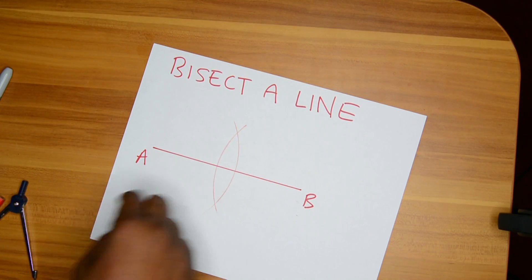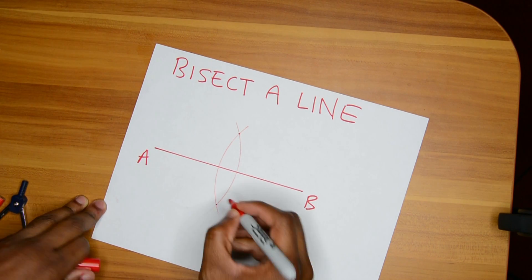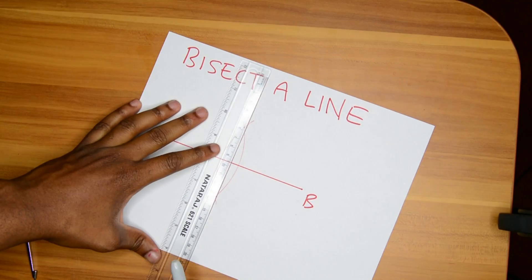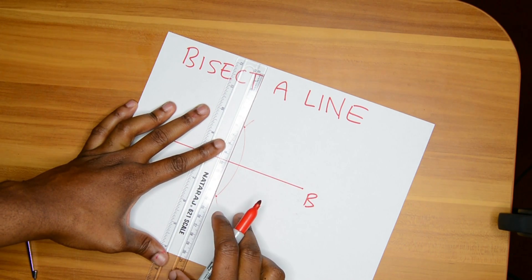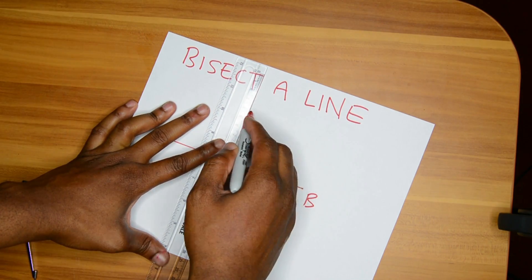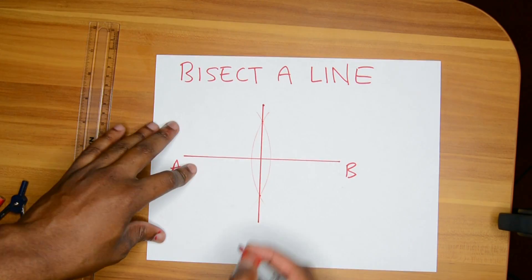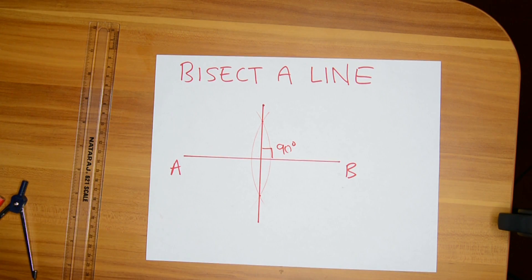So as you can see, we have two points of intersection. Right here and right here. Don't make no dots in the point of intersection in your exam. This is for demonstration purposes only. Demonstrative. So we draw a line through the points and we have now bisect the line. This is a perpendicular bisector. This is actually 90 degrees. Incidentally, this is a way to construct a 90 degrees angle as well.